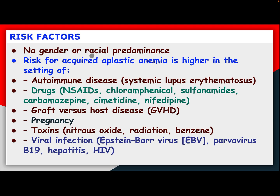Risk factors. No gender or racial predominance. Risk for acquired aplastic anemia is higher in the setting of autoimmune disease like SLE; drugs like NSAIDs, chloramphenicol, sulfonamide, carbamazepine, cimetidine, nifedipine; graft-versus-host disease; pregnancy; toxins such as nitrous oxide, radiation, benzene; and viral infections including Epstein-Barr virus, parvovirus B19, hepatitis, and HIV.